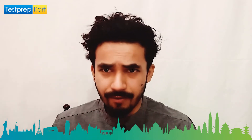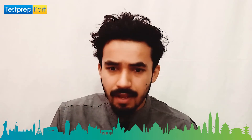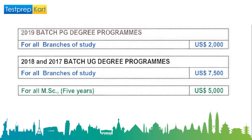For Madras Institute of Technology (MIT), the fee is also USD 7,500 for courses like Aeronautical Engineering, Automobile Engineering, Computer Science and Engineering, Electronics and Communication Engineering, Production Engineering, and Mechanical Engineering. The fee is very reasonable since this is a government institution.